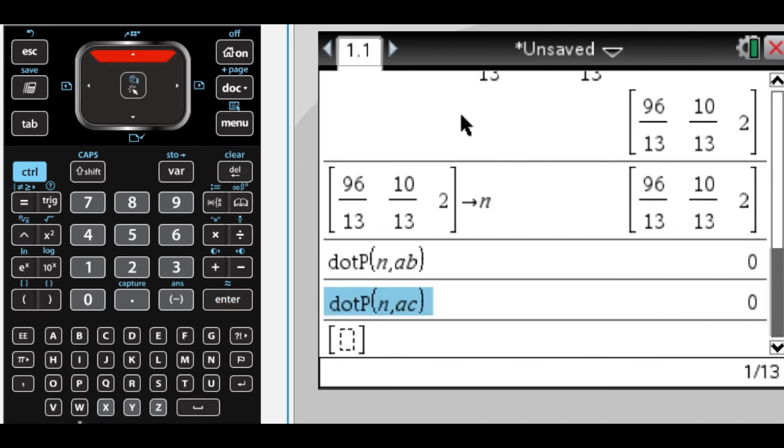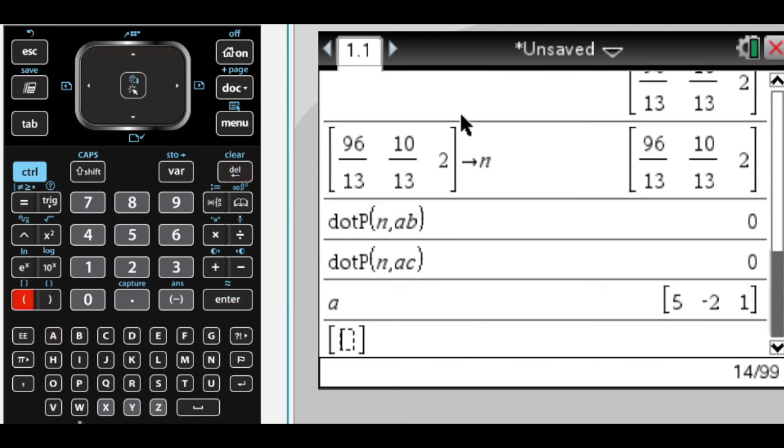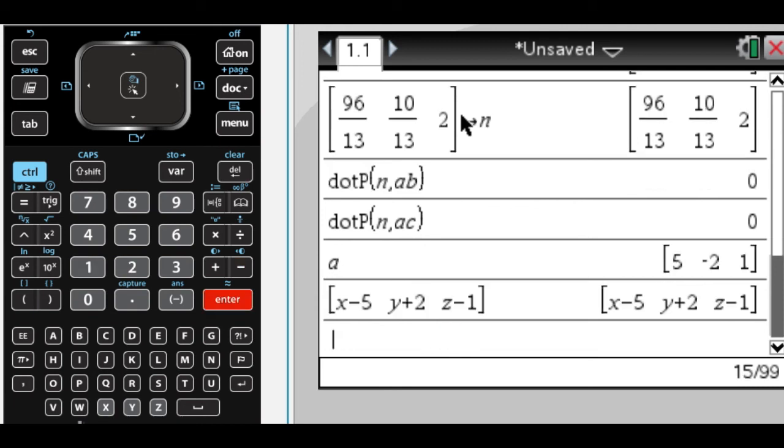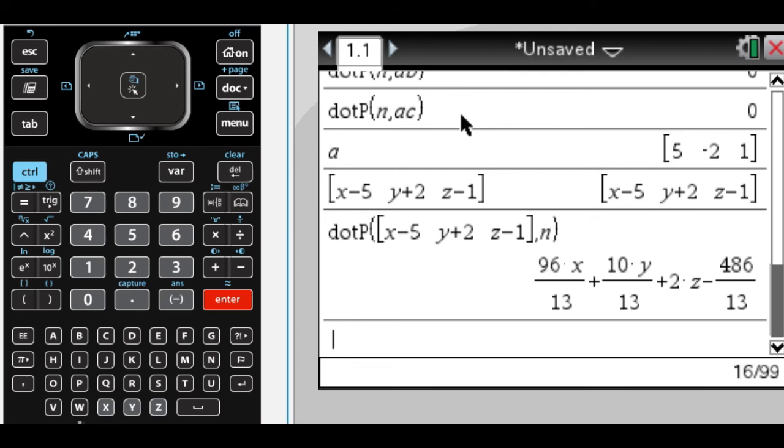My generic vector is going to be (x - 5, y + 2, z - 1). And I need to dot product that vector, which is the current answer, with N.